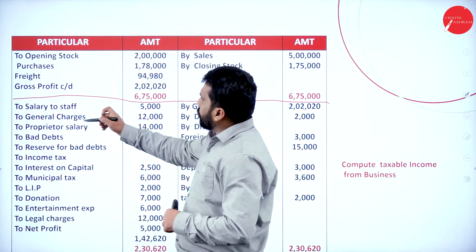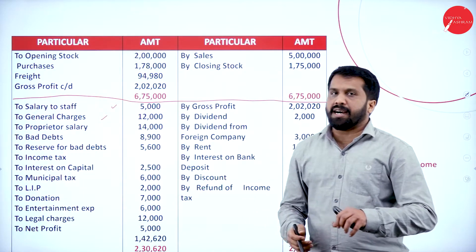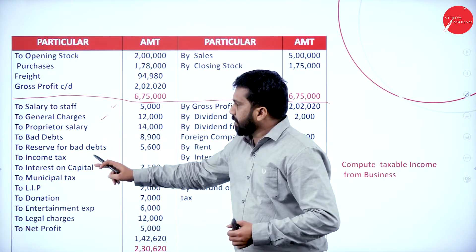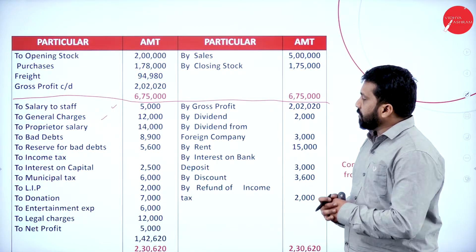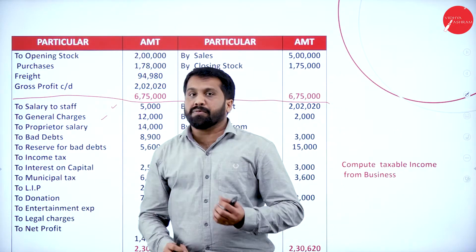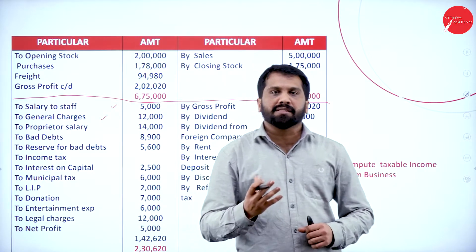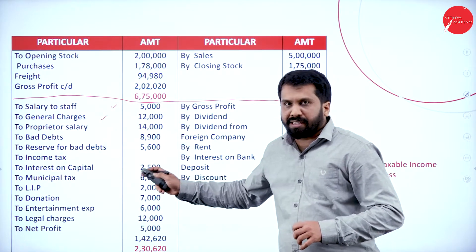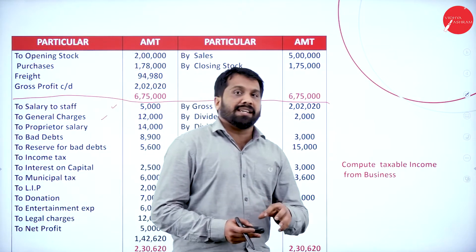We have salary to staff, general charges, and all these — we have to consider whether they are related to business or not. Expenses not related to business are disallowed items. Even items related to business may need adjustment, like salary paid to staff where part may be for personal use.